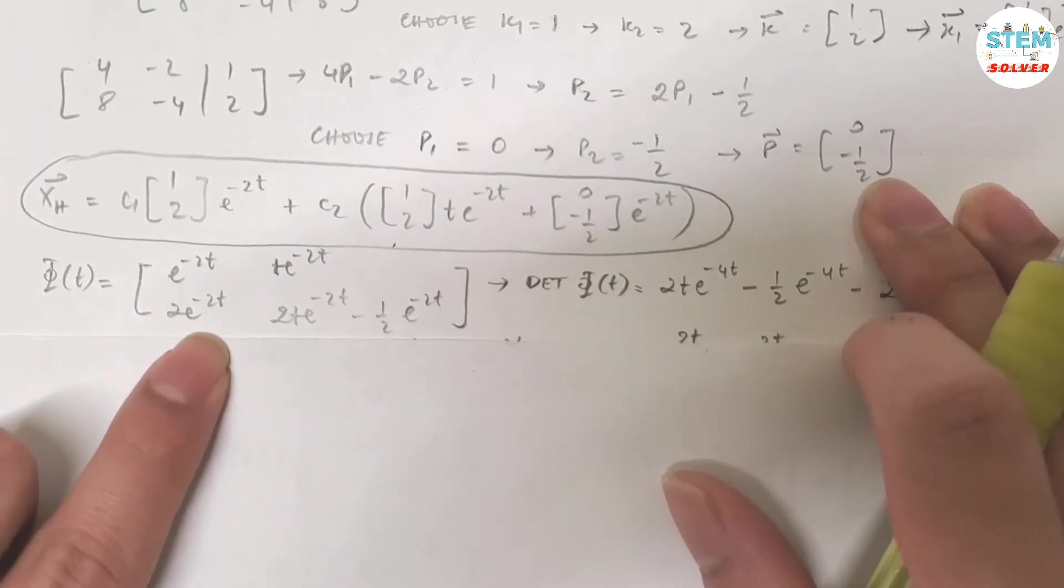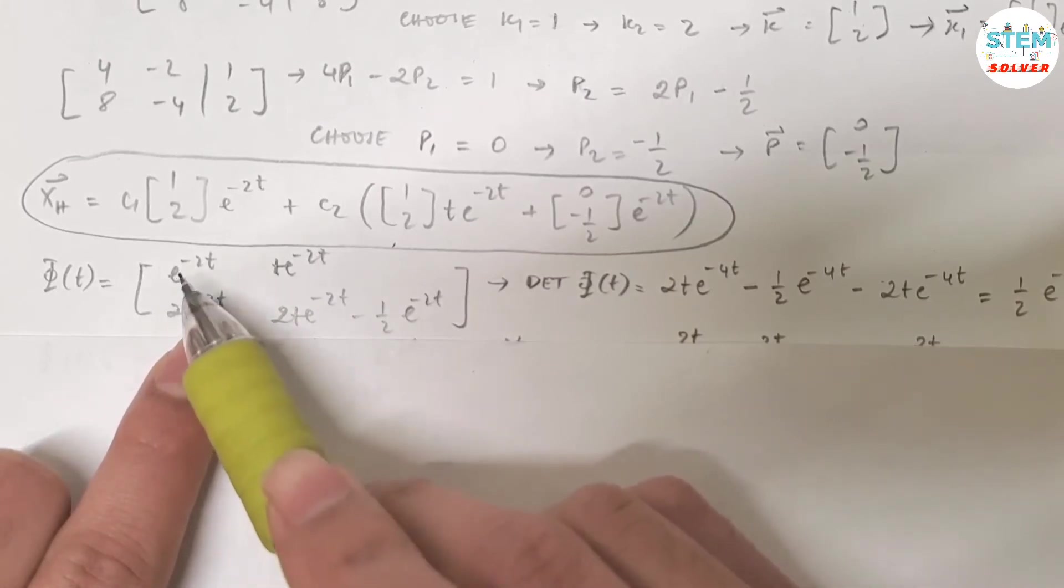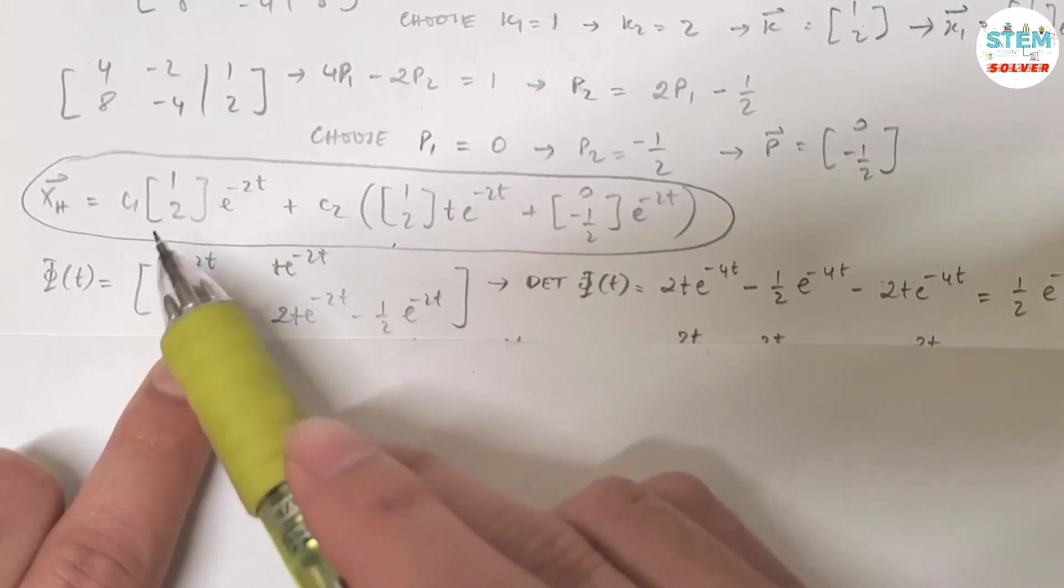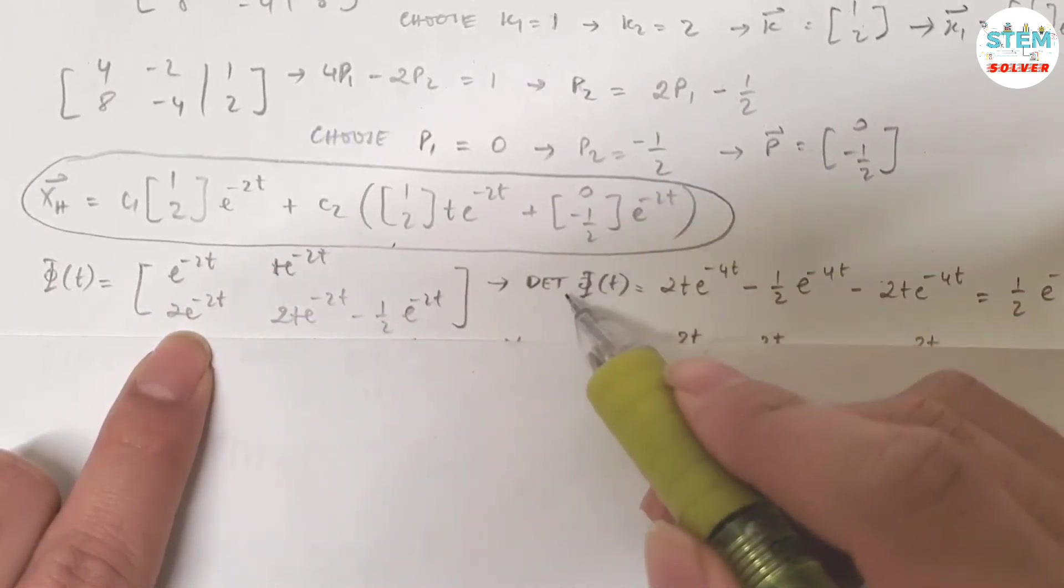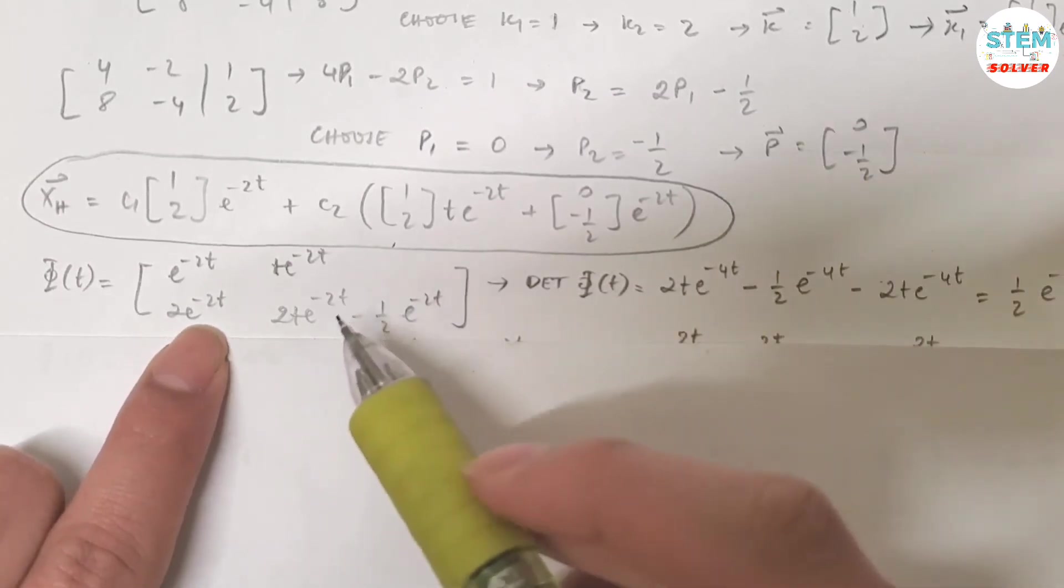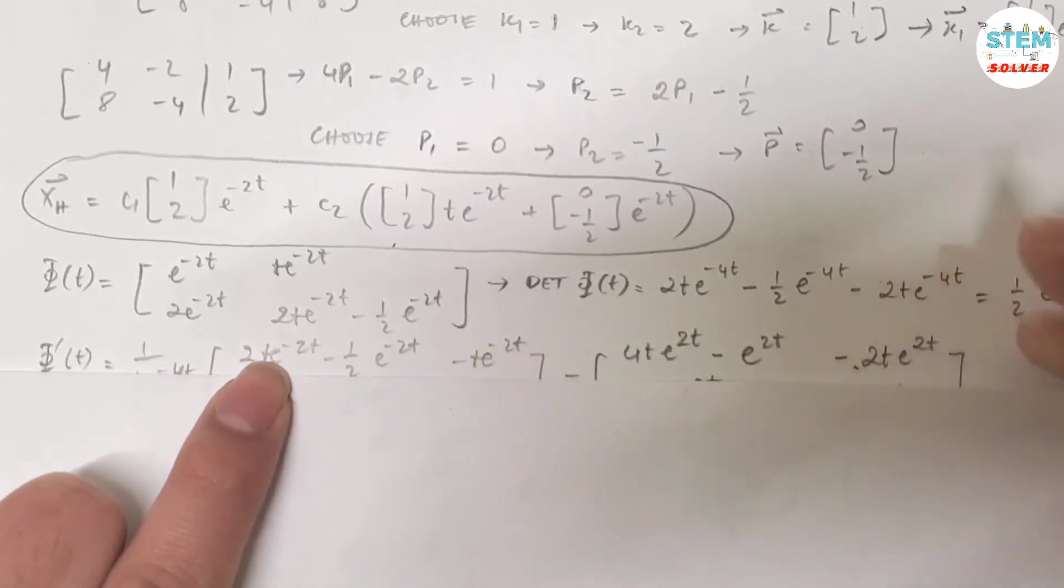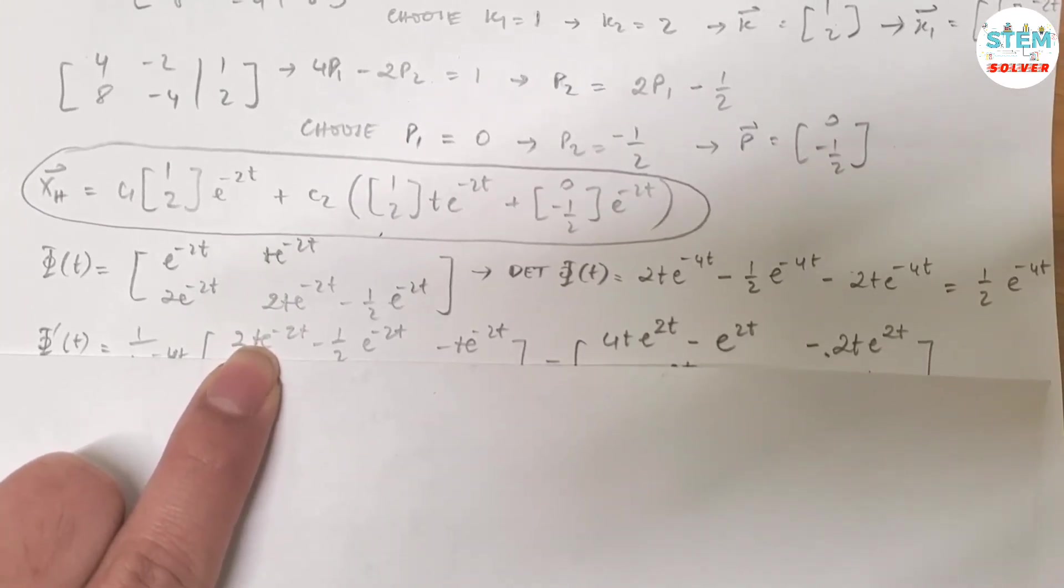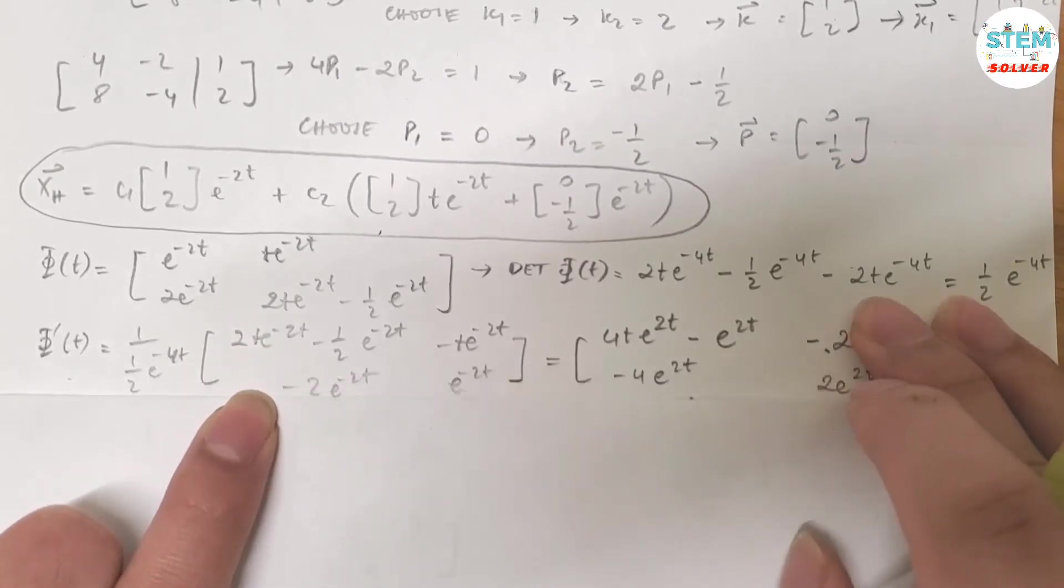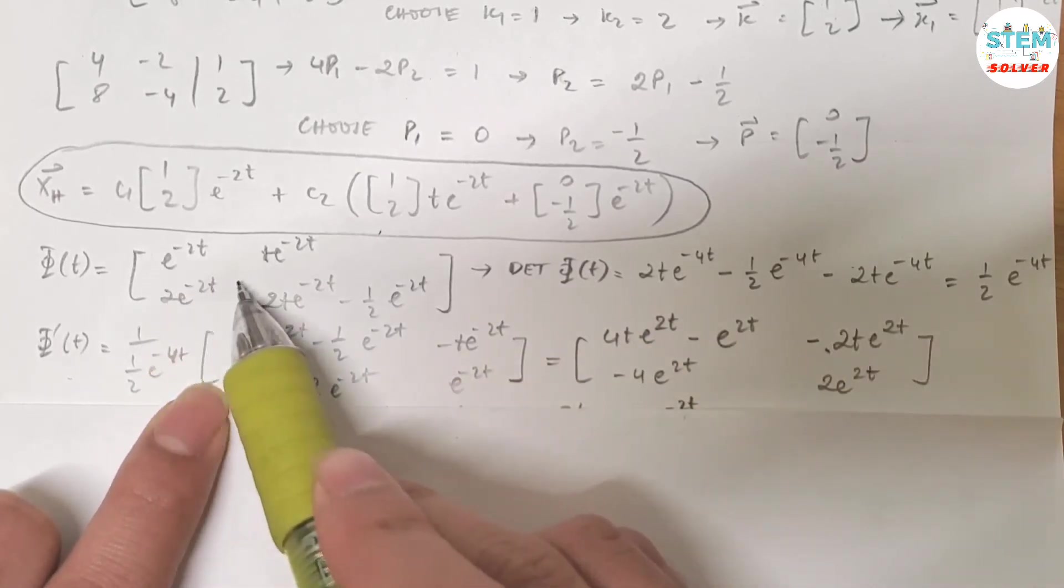Now for non-homogeneous part, similarly, like A minus lambda I, you need to get a matrix Φ(t) from your homogeneous part. So exclude c1, c2, put the rest into this matrix. Then you find the determinant of Φ, which is the same as you find the determinant of A minus lambda I. It gives you 1/2 e to the negative 4t.